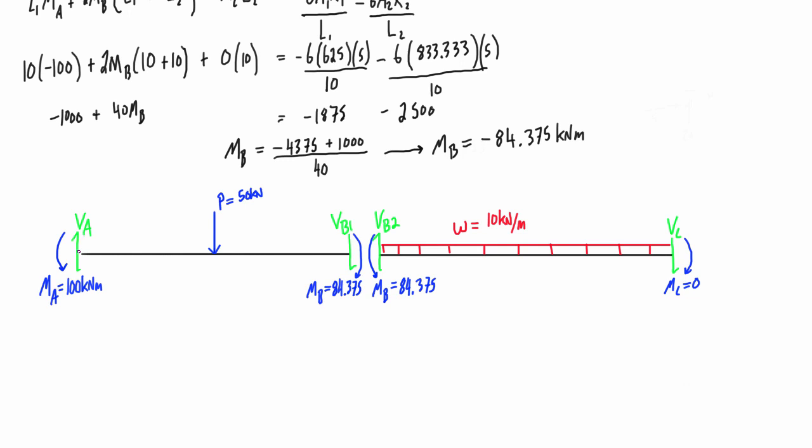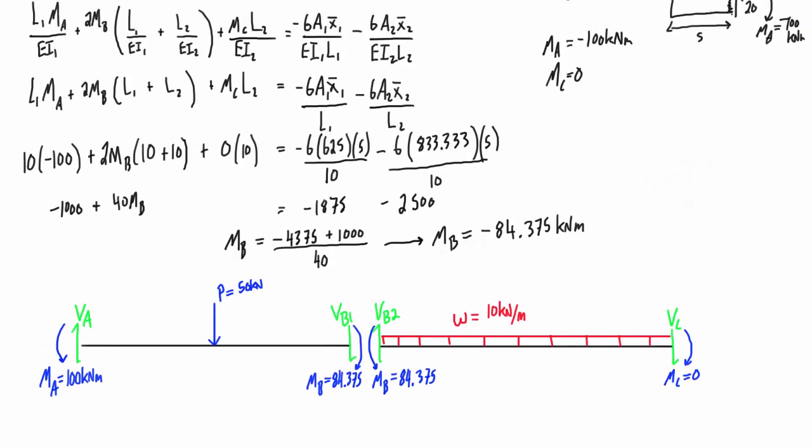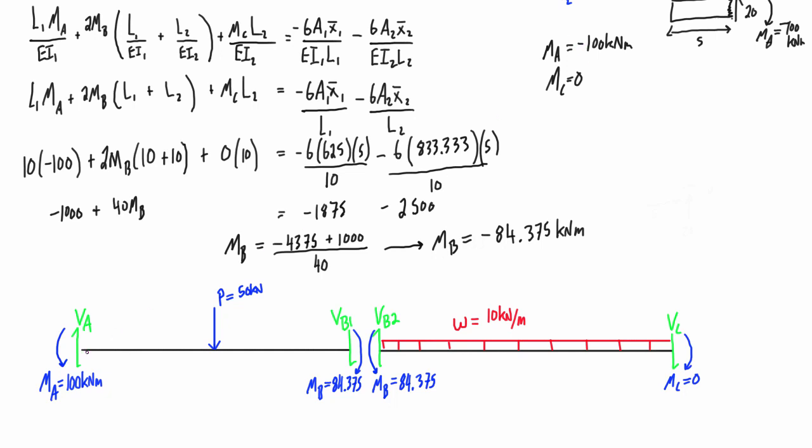Here I've drawn on Ma as positive 100 kilonewton meters going counterclockwise—that is going opposite of our positive sign convention, so that's why we go from negative here we draw it in the negative sense and then write it in a positive value. It's the same thing here: this is negative because it's going clockwise to the right of virtual cut. Same thing if we look at it from the other side—it's also negative going counterclockwise to the left of a virtual cut—and that magnitude is 84.375 negative kilonewton meters.